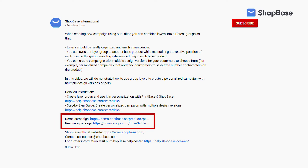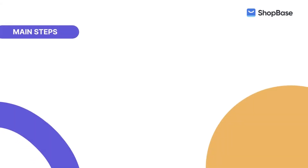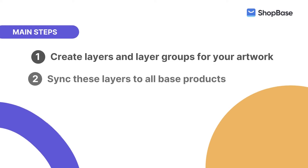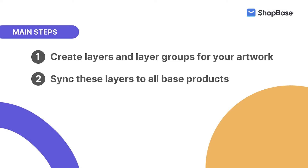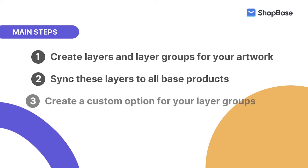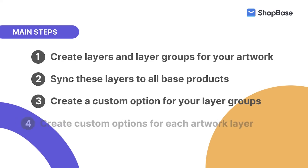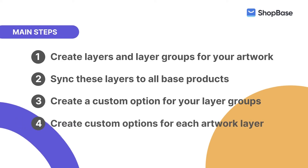Now let's get started creating your campaign. In this tutorial we will focus on four main steps. One: create layers and layer groups for your artwork. Two: sync these layers to all base products. Three: create a custom option for your layer groups. Four: create custom options for each artwork layer.